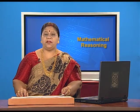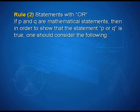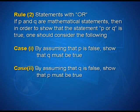Rule 2 was statement with 'or'. If p and q are mathematical statements, then in order to show that the statement 'p or q' is true, one should consider the following. Case 1: by assuming that p is false, show that q must be true. Case 2: by assuming that q is false, show that p must be true.